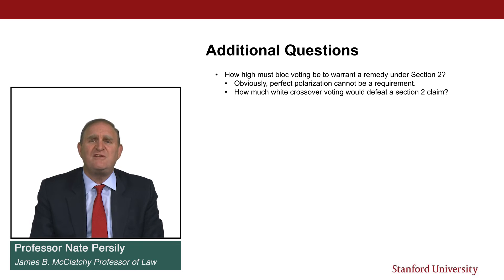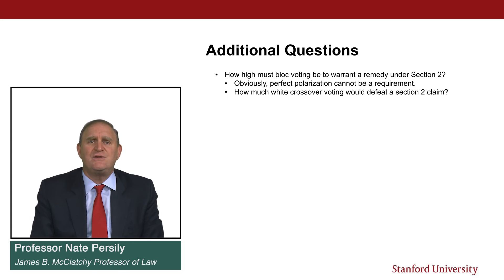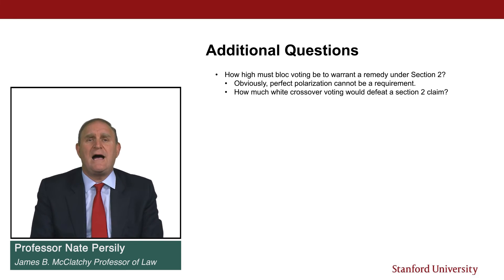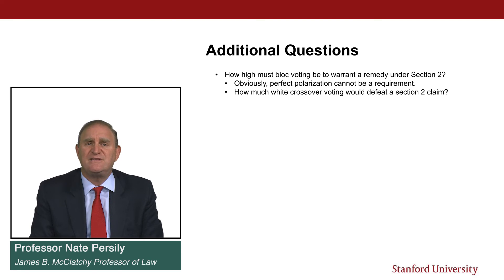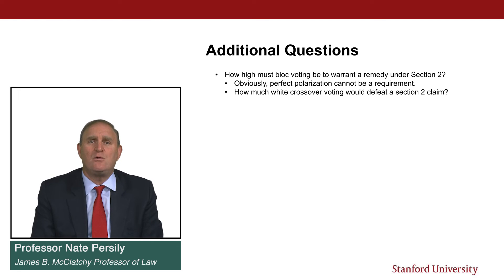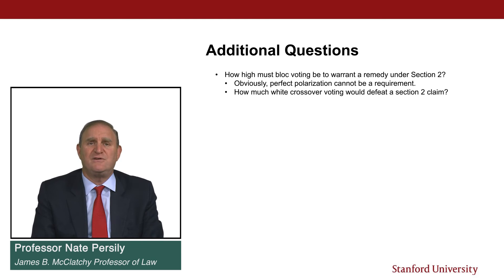Similarly, the question of minority political cohesion raises whether coalitional district claims are possible. Can African-Americans and Latinos bring a case together saying they are over 50% of a district and jointly have a Section 2 entitlement? That was a question specifically left open in Bartlett v. Strickland, which established the 50% rule, yet many cases around the country are being brought by coalitions of minorities.